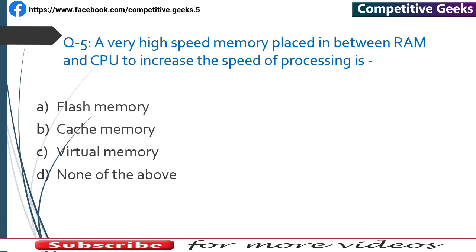Number 5: A very high speed memory placed between RAM and CPU to increase the speed of processing is Cache Memory. Cache memory is very high speed and very expensive.